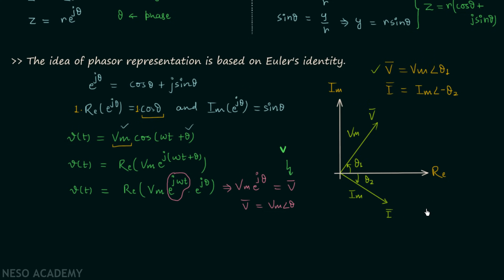One very important point: phasor analysis is applicable only when the frequency is the same. For example, if V(t) has frequency Ω and I(t) also has frequency Ω, we can perform phasor analysis on both. But if I(t) has frequency 2Ω, then we cannot do phasor analysis of V(t) and I(t) together.